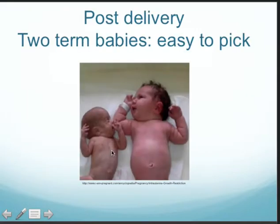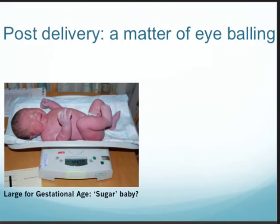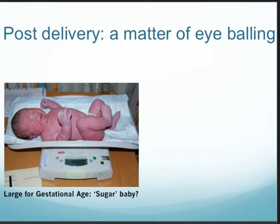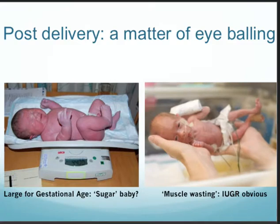Post-delivery, the diagnosis of SGA-IUGR is quite easy. When you look at these two term-born babies, it's very obvious that the baby on the right-hand side has grown normally whilst the left one is SGA-IUGR — you can see muscle wasting. Here is another example: the baby on the left at 4.4 kilos is clearly large for gestational age, prompting clinicians to ask whether the mother has poorly controlled gestational or pre-existing diabetes.